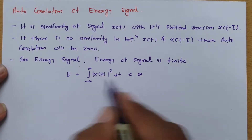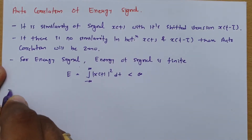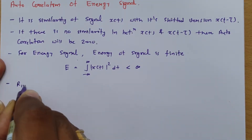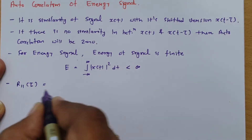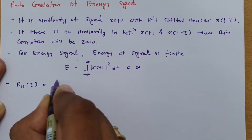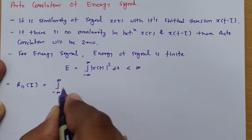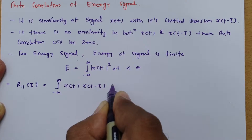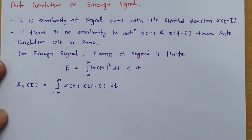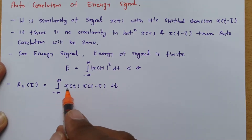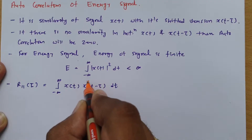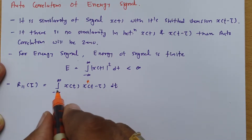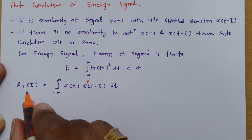Let us define the autocorrelation function. Autocorrelation is defined as r₁₁(τ), where τ is the shifting parameter, calculated by integration from minus infinity to infinity. If x(t) is a real signal, it is defined as x(t) multiplied by x(t minus τ) dt. If x is a complex signal, then one of the two terms should be considered as its conjugate.